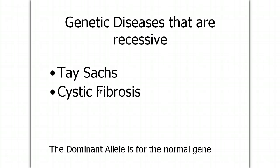Here are some diseases you should know are recessive. That means if you have two of the recessive alleles, you have it. If you have one normal allele — the dominant allele is normal — you don't have it, but you're a carrier. And if you have two dominant alleles, you're just fine.